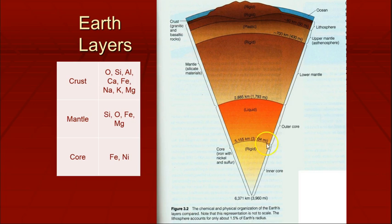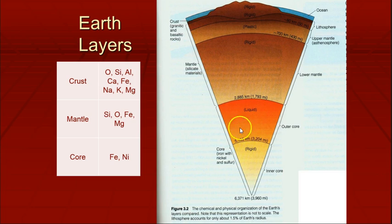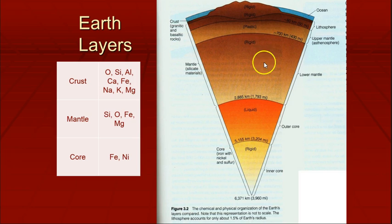When we look at chemical composition, the crust has all the expected things — your metals, oxygen. The mantle contains a great deal of silicate materials, so you'll find a lot of silicon, and there's oxygen there as well. The core is going to be metal — mostly iron and nickel. You have the solid inner core, a liquid outer core, then a rigid lower mantle, and then a plastic-y liquid upper mantle, and then of course the solid crust.